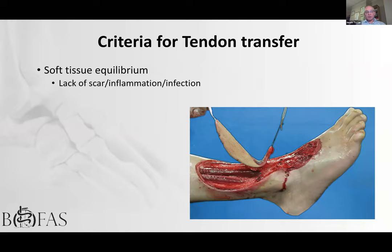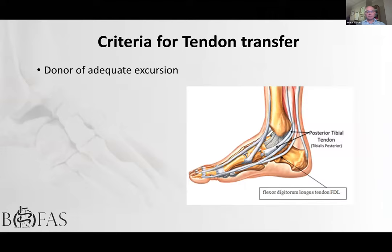Soft tissue equilibrium is essential — a tendon transfer relies on the tendon gliding through soft tissues. Infection, significant scarring, or ongoing inflammatory change will prevent gliding and function. In trauma cases involving the anterior aspect of the foot, it may be worth involving plastic surgeons to combine a tendon transfer with resurfacing to create a healthier tissue bed.